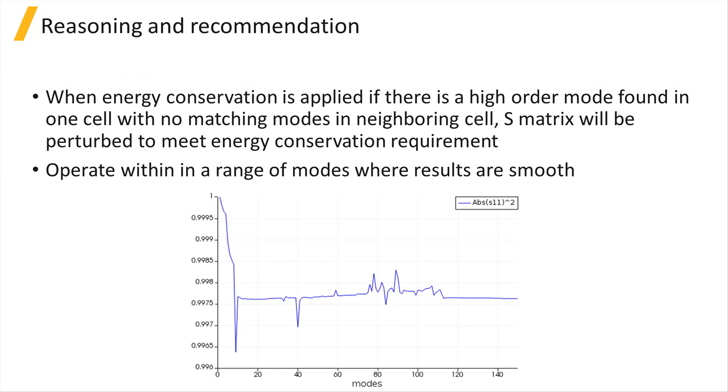The S-matrix can be perturbed when the energy conservation setting is set to either make passive or conserve energy, or if the CVCS subcell method is used. If energy conservation is set to none and the CVCS subcell method is not used, then this problem will not occur.